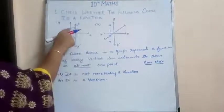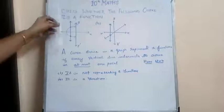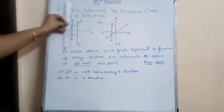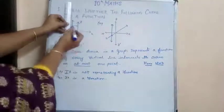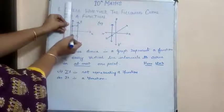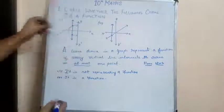So here if you draw a vertical line, look here. So here this is the vertical line and you can see the curve intersects at two points. So this is not representing a function.